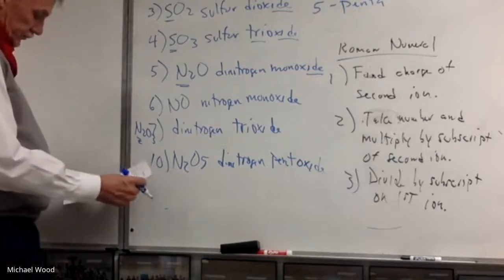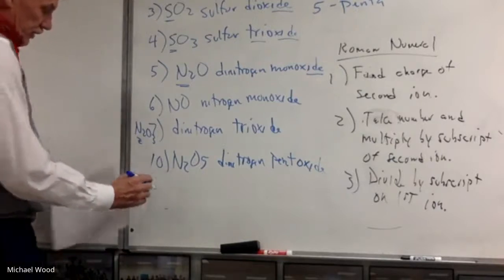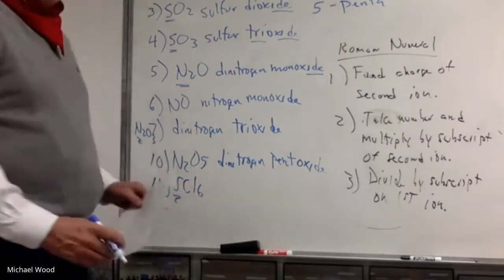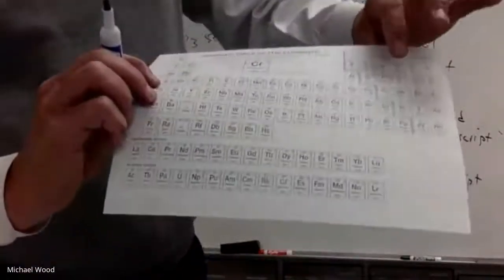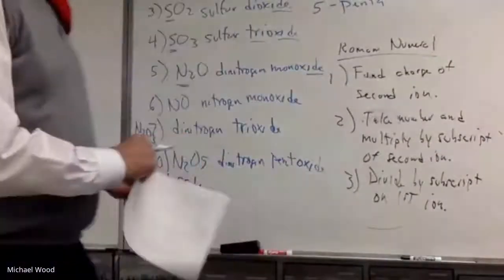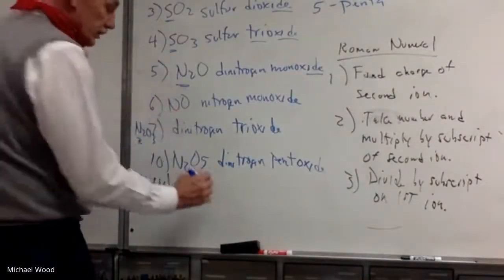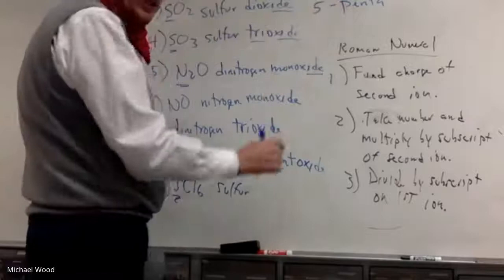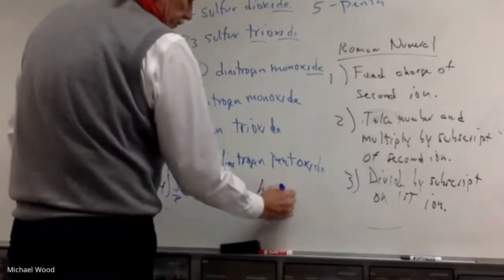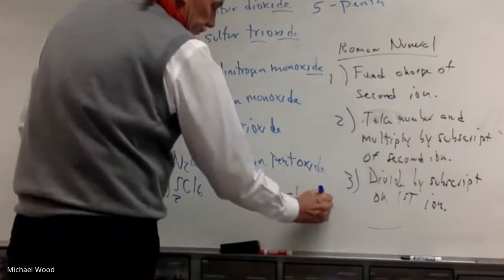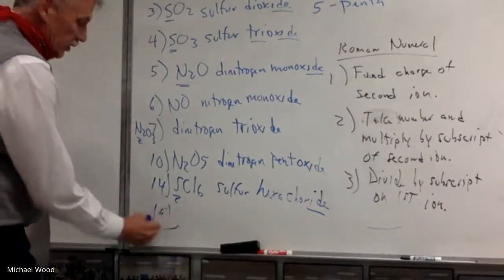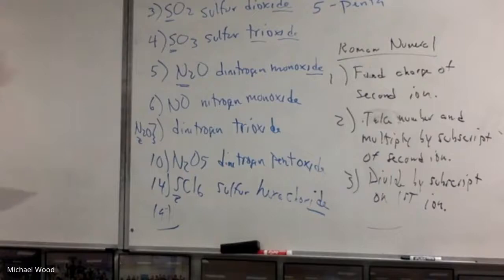So then number 14, SCl6. I locate that first element on the periodic table. Sulfur's right here. So this is a non-metal. This is a type 3, so I'd have sulfur. And then 6 is hexa, hexachloride. Like I said, 1 through 19, up to 19, they're all type 3s. And then after that, I mix them up.